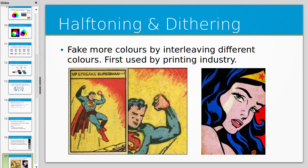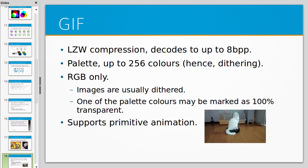Another thing to be aware of is half-toning or dithering. This is a way to fake more colours by interleaving different colours, and it was used in the printing industry. For example, Superman's hand is actually a combination of red and white dots — by spacing the red dots out, you get a combination that looks pink from a distance. This also happens in GIF images, since GIF can only represent 256 colours in any one image.